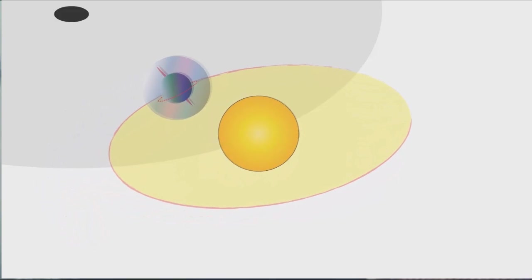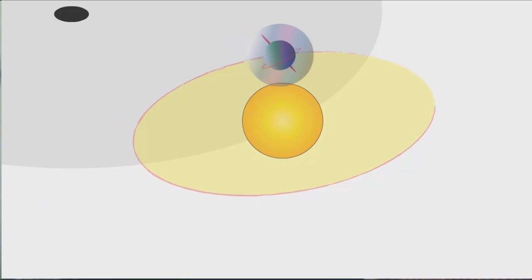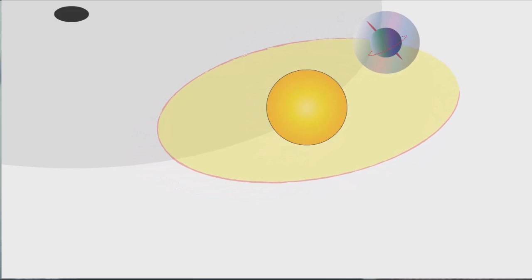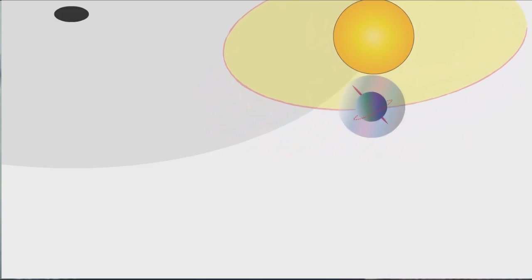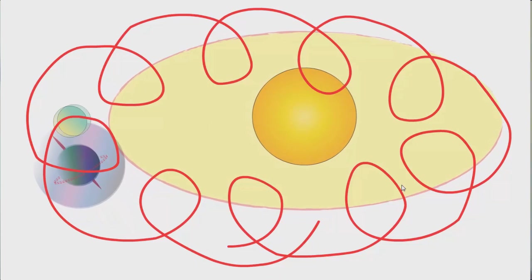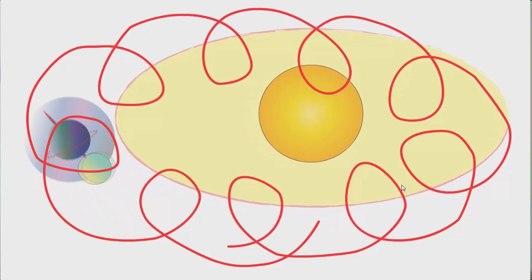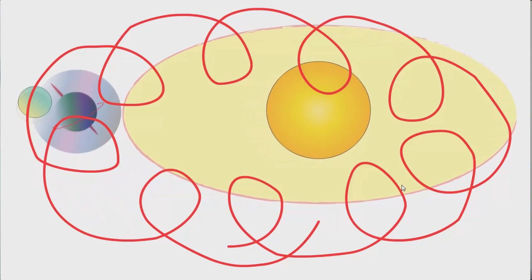This entire video is intended to show you proof that the heliocentric model of the universe is simply impossible, illogical, and defies all physical laws and realistic concepts you could possibly imagine, while the flat stationary plane Earth involves none of these contradictions and problems whatsoever.